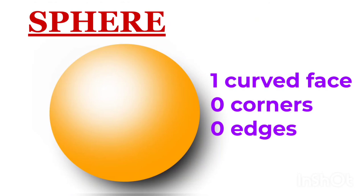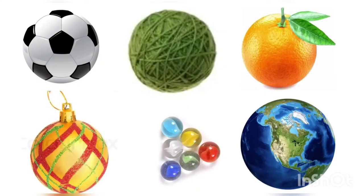Sphere. This is a sphere. It has one curved face, and it has no corners and no edges. These are the examples of sphere: football, wool yarn, decorative balls, marbles, oranges, and our Earth.